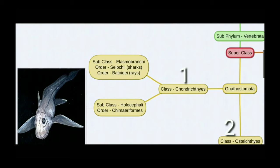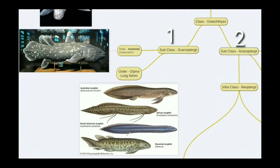Class Chondrichthyes has two subclasses: Elasmobranchii and Holocephali. Subclass Elasmobranchii has two orders — order Selachii (sharks) and order Batoidea (rays). Subclass Holocephali has one order, Chimaeriformes, and the example is the chimaera.